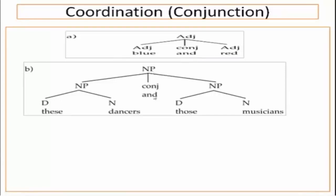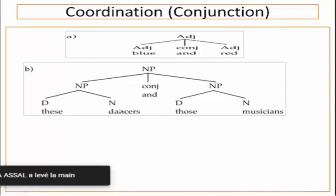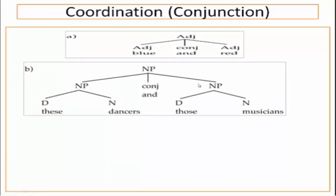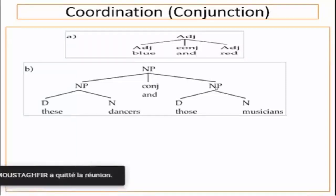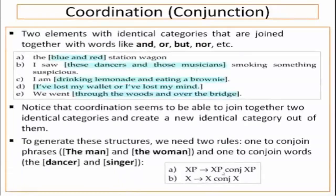When you have conjunction between two noun phrases — 'these dancers and those musicians' — remember this rule: NP → NP conjunction NP. If you have conjunction between VPs: VP → VP conjunction VP. If you have conjunction between two prepositional phrases: PP → PP conjunction PP. This is the meaning of X: XP → XP conjunction XP. X can be replaced by any category — noun, adjective, etc.